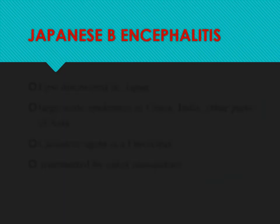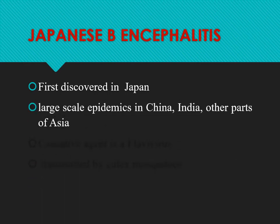Japanese B encephalitis was first discovered in Japan, hence the name. Large epidemics have been seen in China, India, and other parts of Asia, making it the dominant encephalitis virus in Asia.